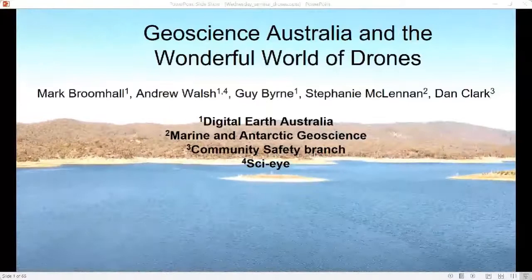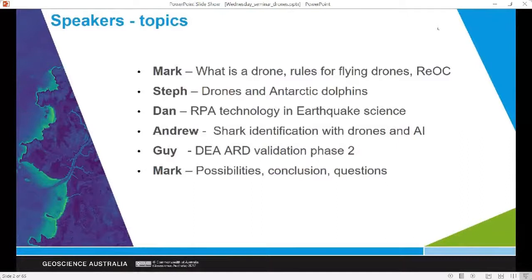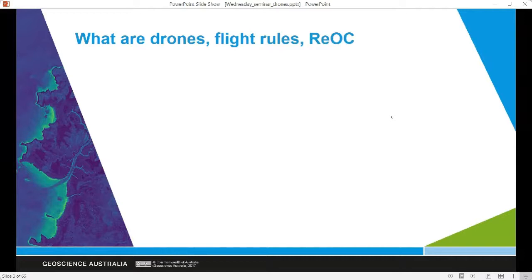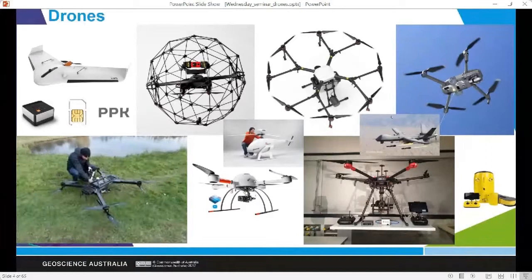Our talk today is Geoscience Australia and the Wonderful World of Drones. I'll give a bit of an overview of drones and some rules, and then we'll talk about the science we actually do here with drones. Drones can be either fixed wing or rotor drones — most common are multi-rotor, so 4, 6, and 8 rotors are fairly common, but they can be any configuration. Even a submersible drone can use the same basic software as other drones, so there's a huge scope for what they can do.